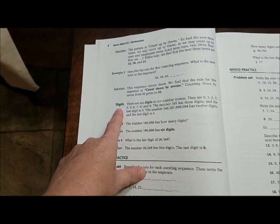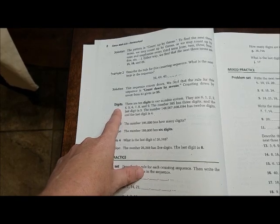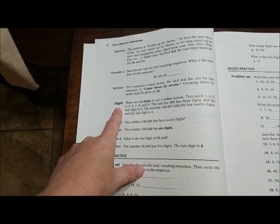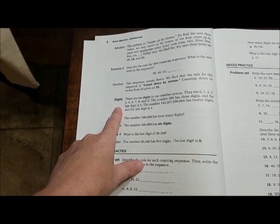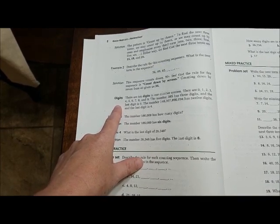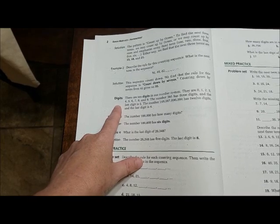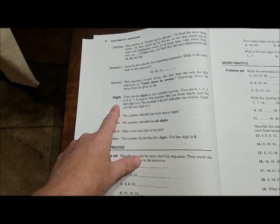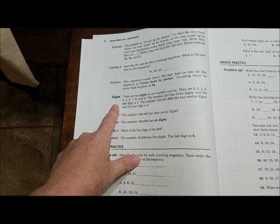Alright, and then there are 10 digits in our number system. They are 0, 1, 2, 3, 4, 5, 6, 7, 8, and 9. The number 385 has three digits. The last digit is 5.